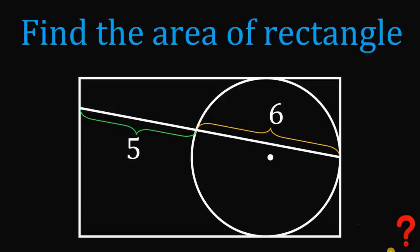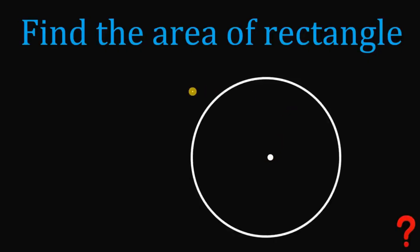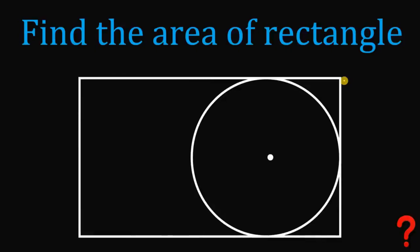Can you solve this geometry challenge? Here's the question. Given this point, let's draw a circle. And now let's draw a rectangle such that 3 of its sides must be tangent to our circle.